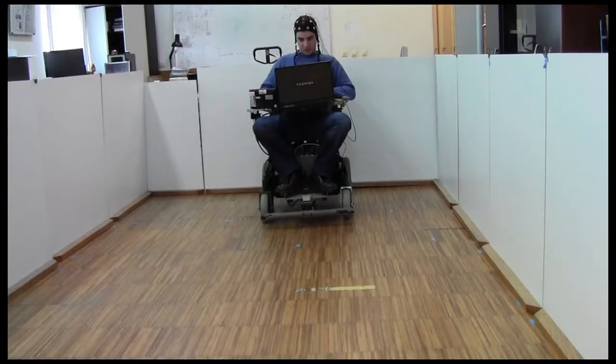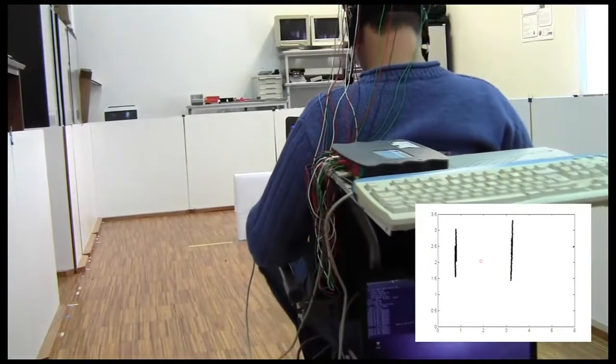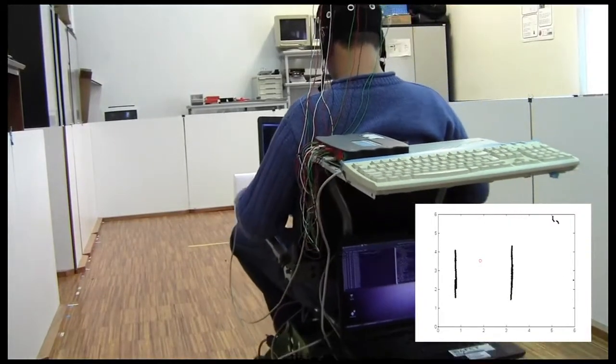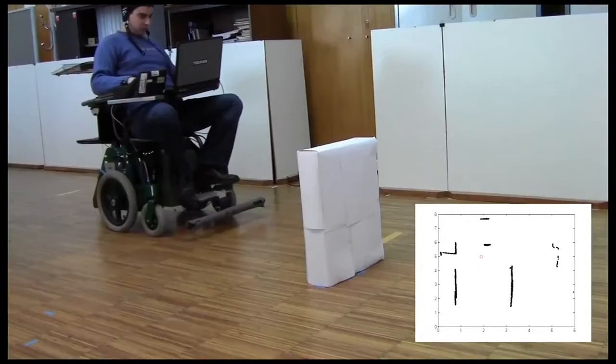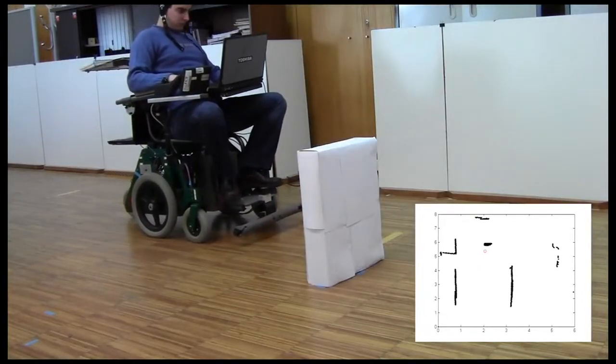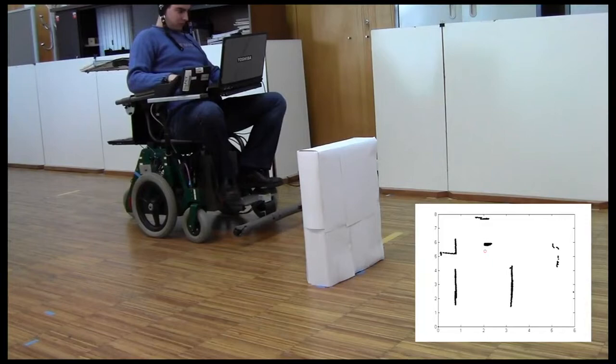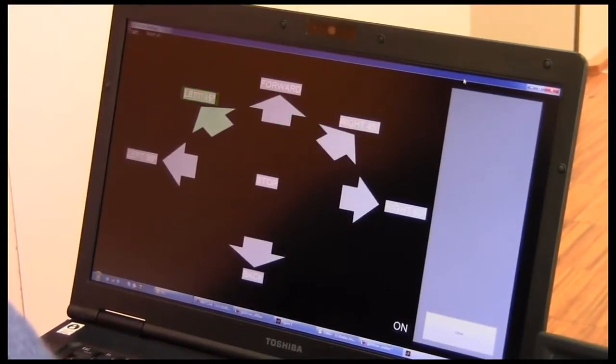The first test scenario consisted in steering the wheelchair in a structured known environment. When the wheelchair reaches certain target points, where a steering decision is required, it stops and waits for the BCI command. This user needs 3 repetitions to carry out command selection.